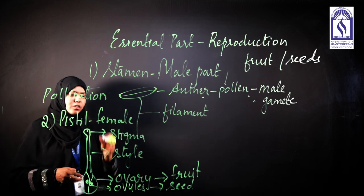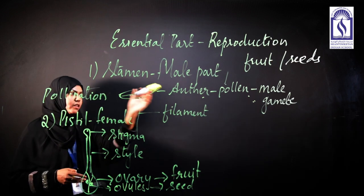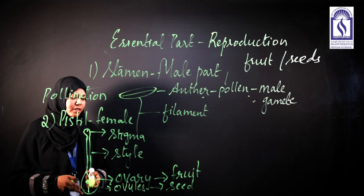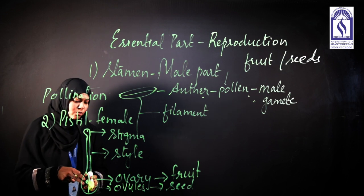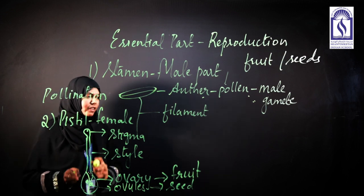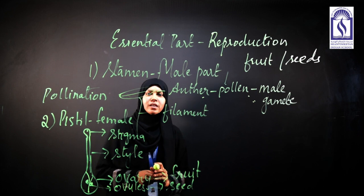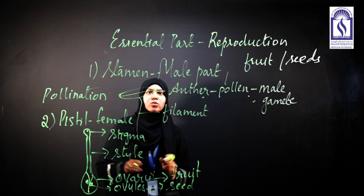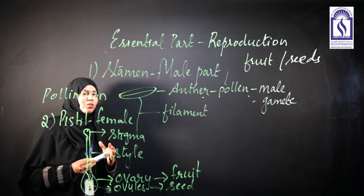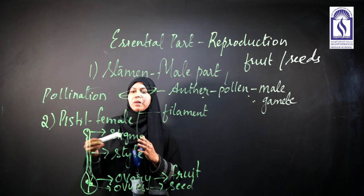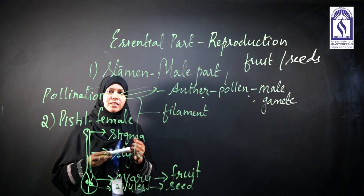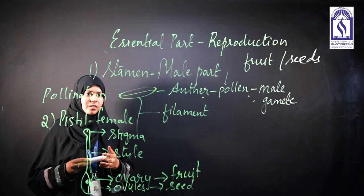Once pollination is done, the pollen — the male gametes — will reach into the female gametes, reaching into the ovules, and inside, the fertilization process takes place, leading to the formation of fruit and seed. So, these were the four different parts of the flower: the sepals, petals, stamen, and pistil.